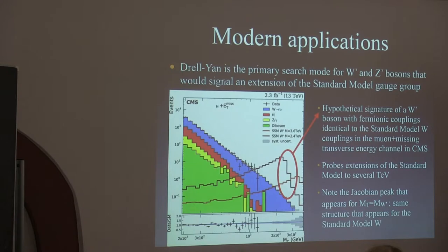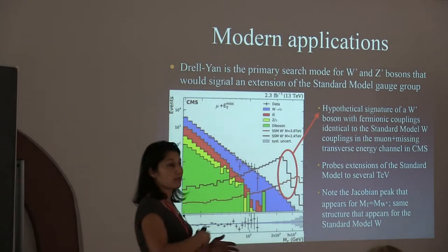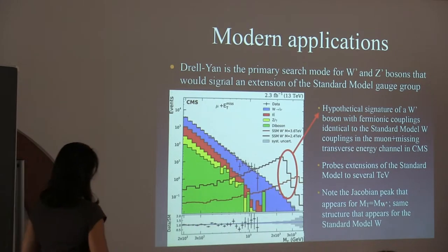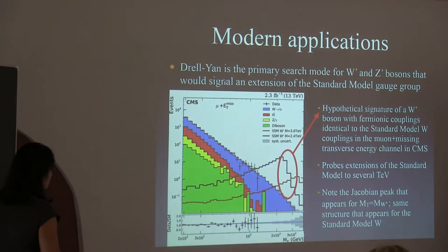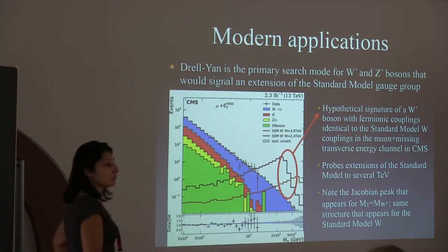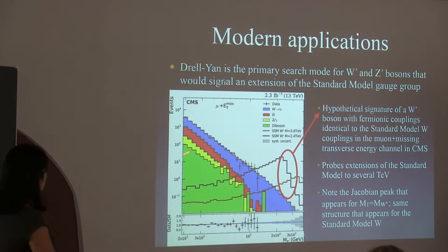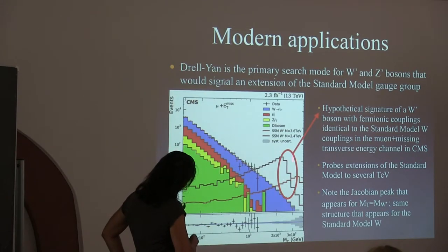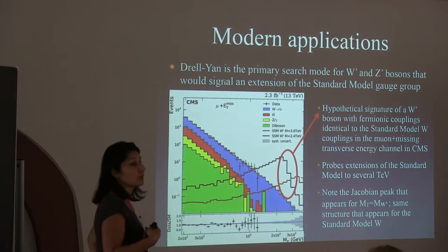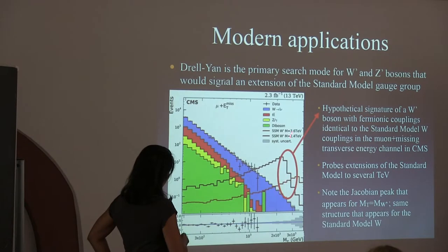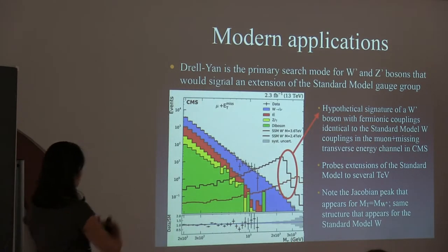Another modern application is new physics searches. A plot of transverse mass as a function of events, with data over standard model at the bottom, illustrates searches for the sequential standard model W-prime, which couples to fermions like the W. Signal peaks at 3.6 TeV and 2.4 TeV for W-prime show the same Jacobian peak structure seen for the W. All the analysis developed to understand the W mass can be applied to searches for new physics such as the W-prime mass.